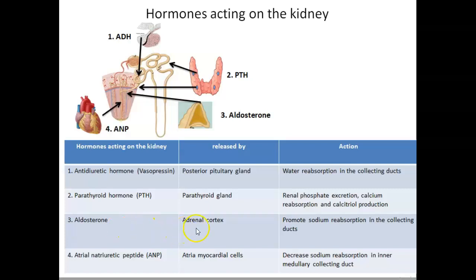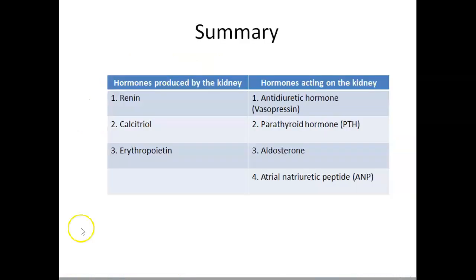The third hormone acting on the kidney is aldosterone. Aldosterone is produced from the adrenal cortex by the action of angiotensin 2, which stimulates the adrenal cortex to produce aldosterone. The major action of aldosterone is in the last part of the nephron, within the cortical collecting duct, and the action is to promote sodium reabsorption. The last hormone is atrial natriuretic peptide, produced from the atrial myocardial cells, and it is especially important in regulation of blood volume.